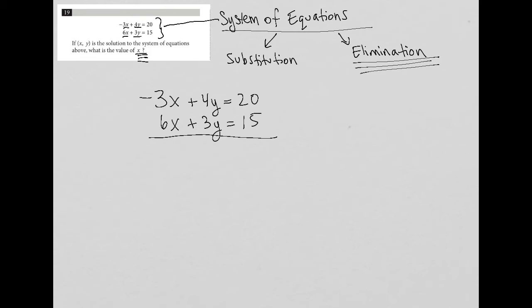So, right now I have a 4y and a 3y. So, if I were to multiply the top equation by negative 3, I'd end up with negative 3 times negative 3x, which is positive 9x, negative 3 times positive 4y, which is negative 12y, and negative 3 times 20, which is negative 60. And then I'm going to multiply this second equation by positive 4.